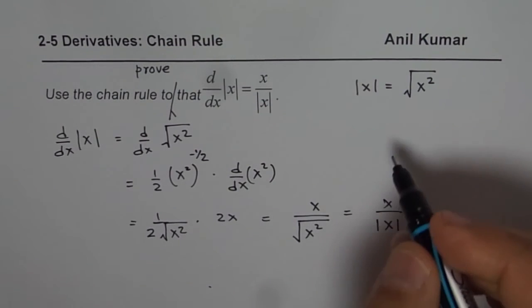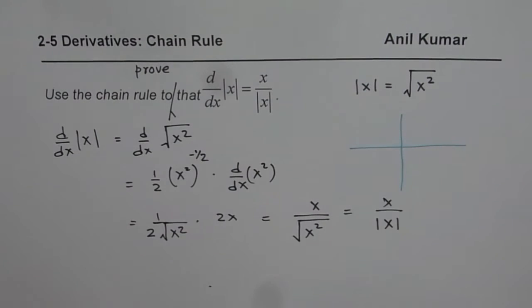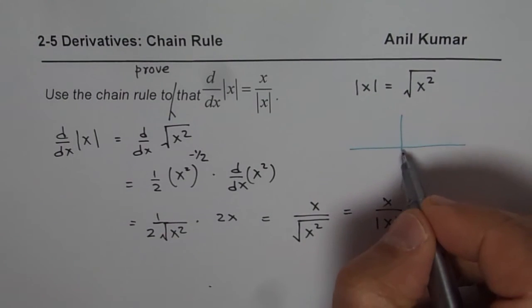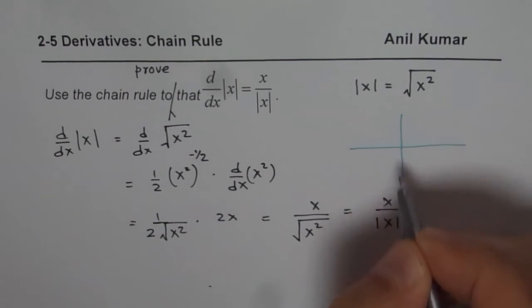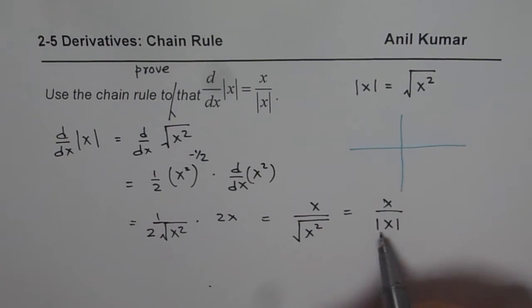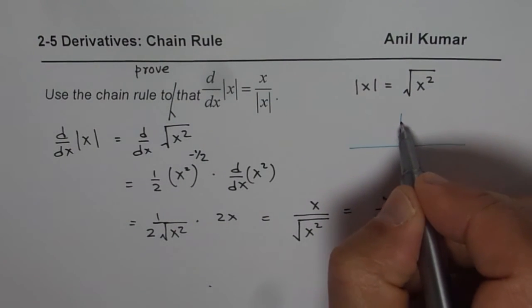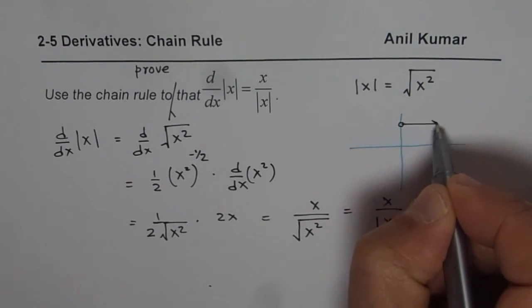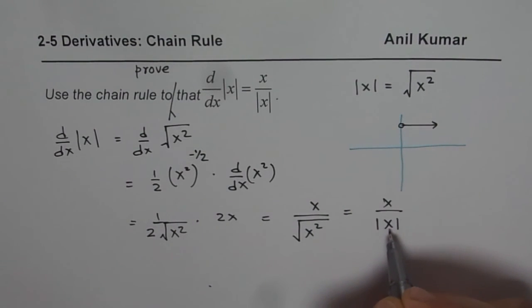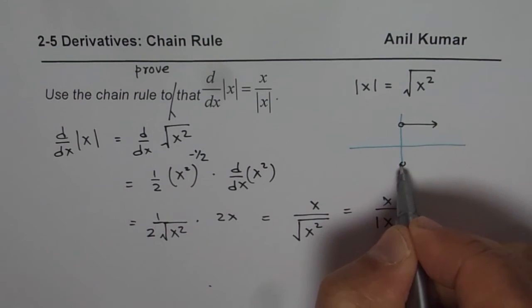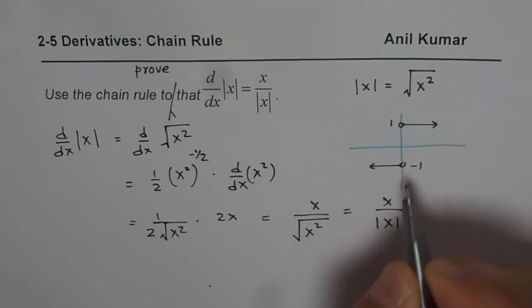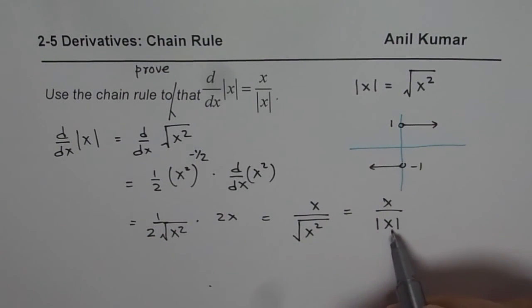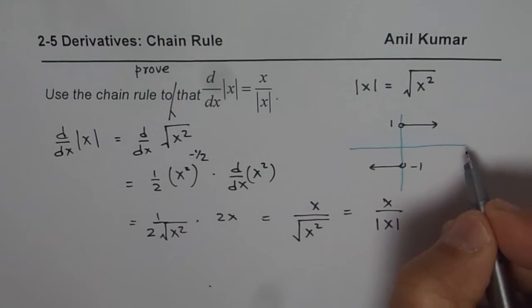So derivative of the function will be, if you sketch the graph, if x is 0, it is undefined. But if x is positive, absolute x is positive, so you get a value of 1. But if x is negative, then you get minus 1. And it is not defined for x equals to 0, as you can see here.